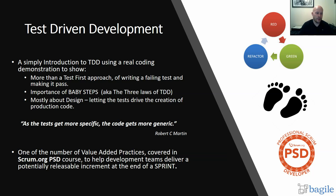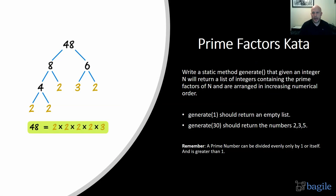I also want to add that it's one of a number of value-added practices covered in the scrum.org PSD course to help development teams deliver a potential release increment at the end of the sprint. So how are we going to do this? We're going to use a kata — the Prime Factors kata — which states that we need to write a static method 'generate' that, given an integer n, will return a list of integers containing the prime factors of n arranged in increasing numeric order. For example, generate(1) should return an empty list, and generate(30) should return 2, 3, and 5. Remember, a prime number can be divided evenly only by 1 or itself and it has to be greater than 1.